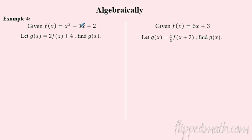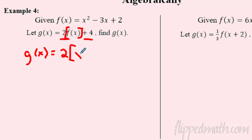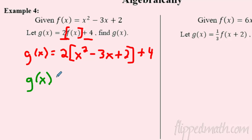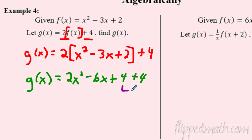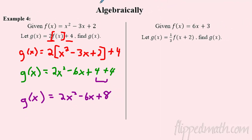Now let's do this algebraically. Here you're doubling all your Y values and then adding four — a dilation of two followed by a shift. To find the new function, write it as two times the whole function in brackets, then add four: 2[x² − 3x + 2] + 4. Distribute the two to get 2x² − 6x + 4, then add the plus four. Combining like terms gives the final transformed function: 2x² − 6x + 8.